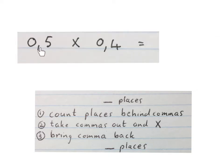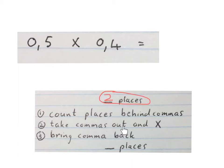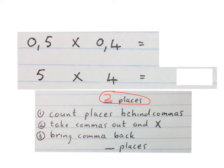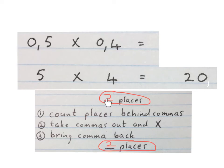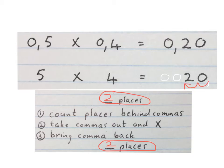Here is our second example: 0,5 times 0,4 equals. First we count the places behind the commas — there's one place behind the comma in 0,5, and one more in 0,4, that's two places behind the comma in total. We write two places and circle it. Second, we take the commas out and multiply: 5 times 4 gives us 20. Lastly, we bring the comma back two places from behind, giving us 0,20. If you know your decimals well, you may also write 0,2.